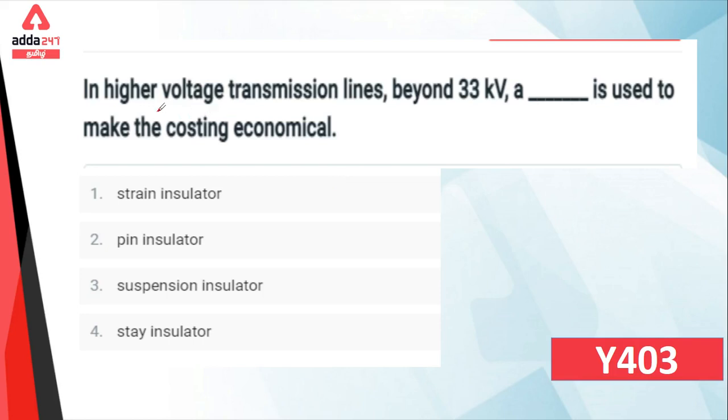First question: In high voltage transmission lines beyond 33kV, which insulator is used to make the costing economical? The keyword is beyond 33kV. We use insulator types: pin type, shackle type, and string type.